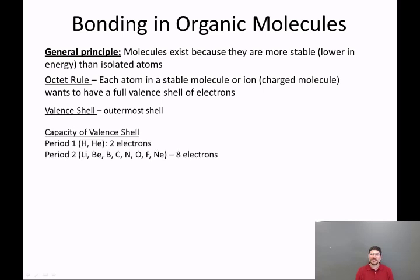We need to begin by considering what the capacity of the valence shell is for different elements, and this is very easy. You just look at what period the element is in on the periodic table. For this course, the elements we're going to be most concerned with are hydrogen, carbon, nitrogen, and oxygen. Hydrogen is in period one, the other three are in period two. All elements in period one have a capacity of two electrons in their valence shell. All elements in period two have a capacity of eight electrons in their valence shell.